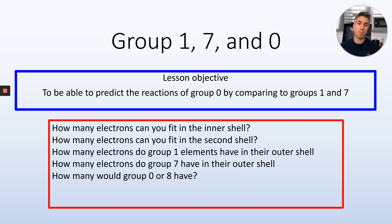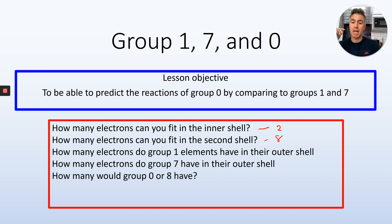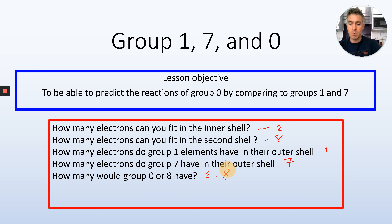How many electrons can you put on the inner shell? The answer is 2. How many electrons can you put on the next shell? The answer is 8. How many electrons do group 1 elements have in their outer shell? They have just 1. Group 7 have 7 — see the pattern. How many would group 0 have? The first one, helium, just has 2, but all the others have 8. That outer shell is a good starting place because it's what makes all these elements the way they are.